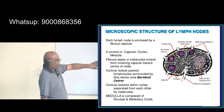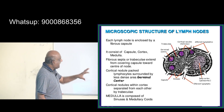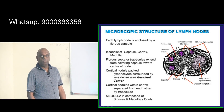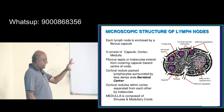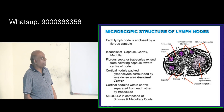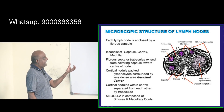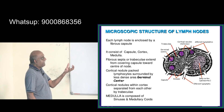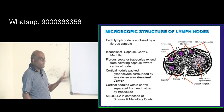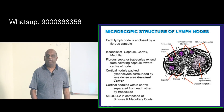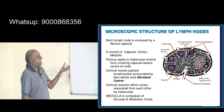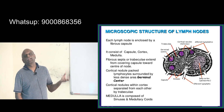Each lymph node is enclosed by a fibrous capsule. It has a capsule, a cortex, and a medulla. There are fibrous septa or trabeculae coming from the covering capsule towards the center of the node. There are cortical nodules packed with lymphocytes, surrounded by a less dense area called the germinal center. In the medulla, you have sinuses and medullary cords. The cortical nodules in the cortex are separated from each other by structures called trabeculae.